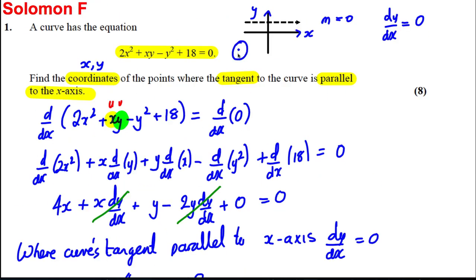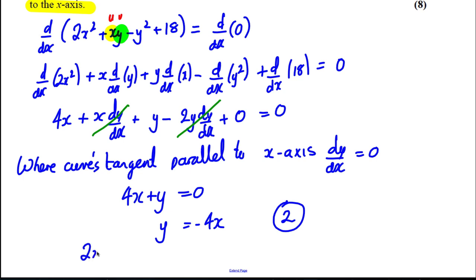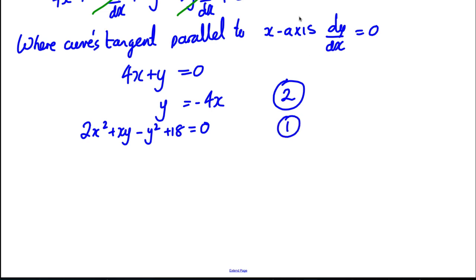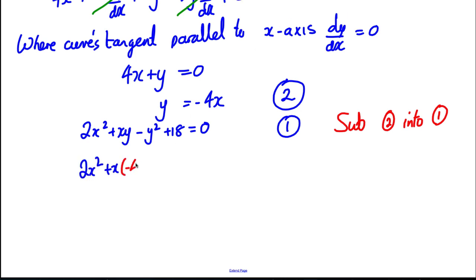For the point to be on the curve, it must also satisfy equation 1: 2x² + xy − y² + 18 = 0. So for the tangent to be parallel to the x-axis, y = −4x (equation 2), and it must also satisfy the curve equation (equation 1). We have two equations in two unknowns, so we substitute equation 2 into equation 1, replacing y with −4x: 2x² + x(−4x) − (−4x)² + 18 = 0.